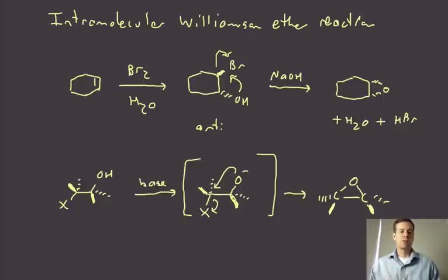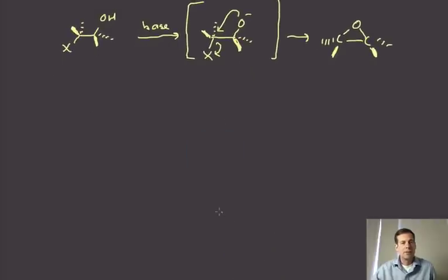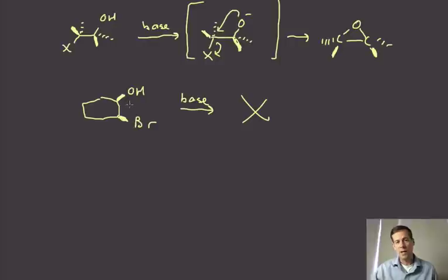Now, important thing to keep in mind is that this requires the ability of O and X to get into an anti-periplanar conformation. So in the case of a cyclic halohydrin, for example, if I have this stereochemistry, you ask, can this form the epoxide? And the answer is no, because this carbon-bromine bond has no way to get itself into an anti-periplanar conformation relative to that hydroxyl group. So that is a case where you simply can't form an epoxide by an SN2 type of reaction.